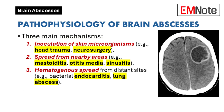Pathophysiology. Brain abscesses develop through three primary mechanisms. The first involves the inoculation of microorganisms from the skin, often due to head trauma or neurosurgical procedures. The second mechanism is the spread of bacteria from nearby areas, such as in cases of mastoiditis, otitis media, or sinusitis.